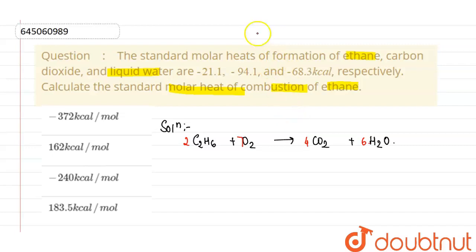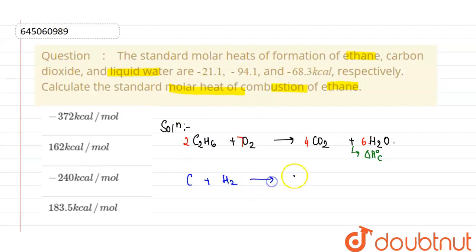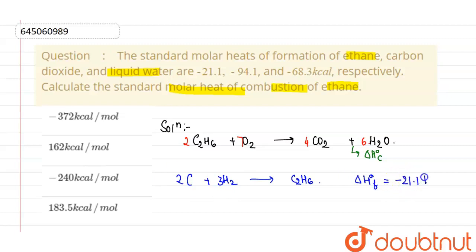Now in the question, it has been asked the molar heat of combustion of this, which I am representing as delta naught Hc. In the question, the molar heat of formation of ethane is given. Formation of ethane will be 2C plus 3H2 giving us C2H6, and this standard molar heat of formation is given as minus 21.1 kilocalories.